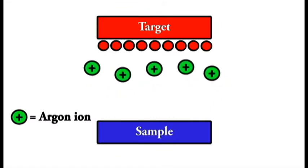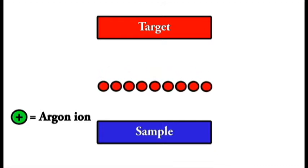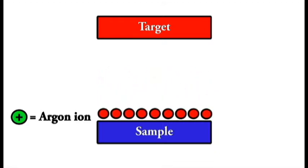To do this, we energize argon atoms to hit this target. This knocks off magnetic material in a controlled manner. The magnetic material then builds up on our silicon sample like snow builds up in the winter. This process is called sputtering.